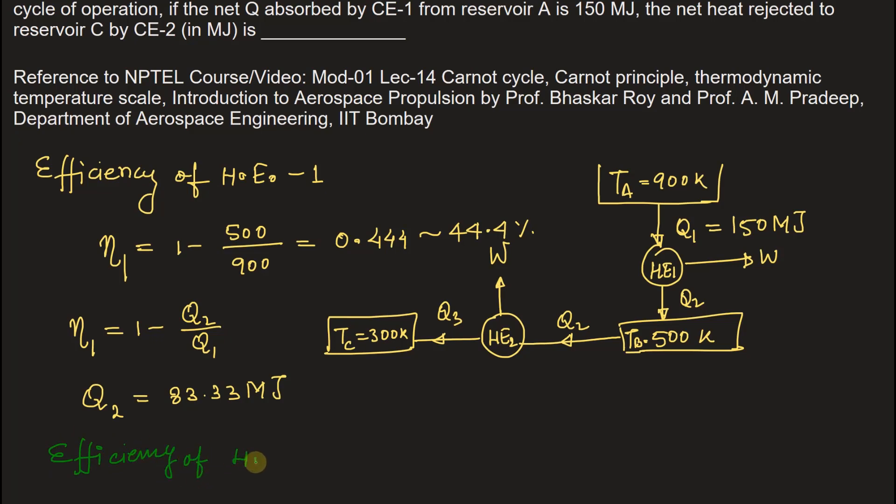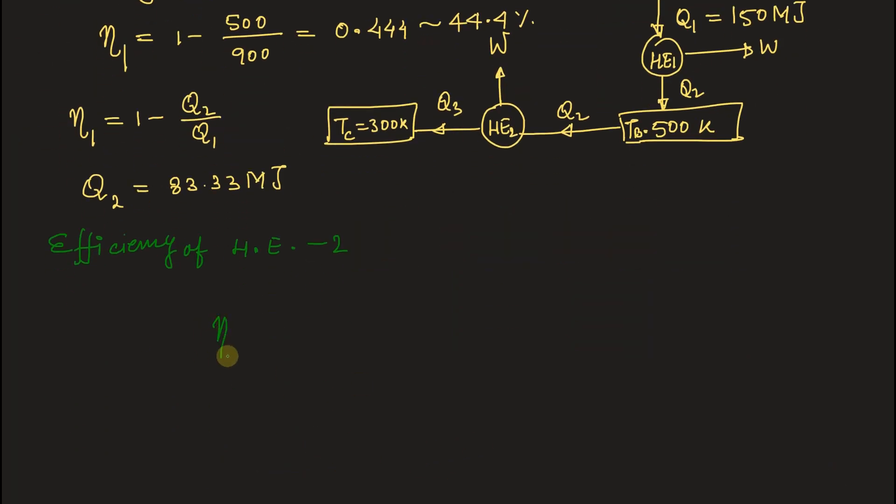Efficiency of second heat engine: eta 2 is equal to 1 minus 300 by 500. Eta 2 is equal to 1 minus Q3 by Q2, and we have already got the value of Q2 that is 83.33 megajoule.